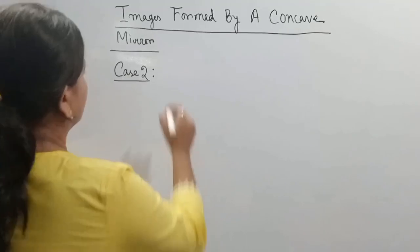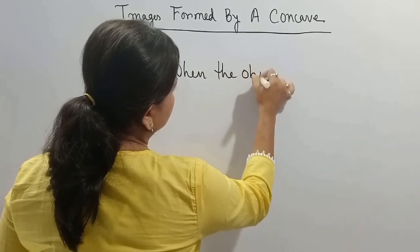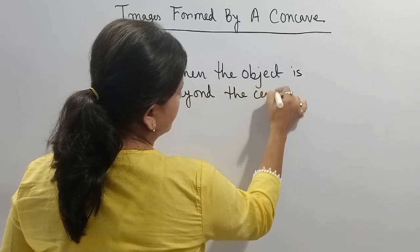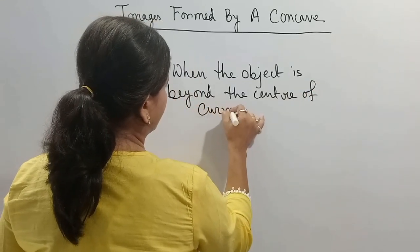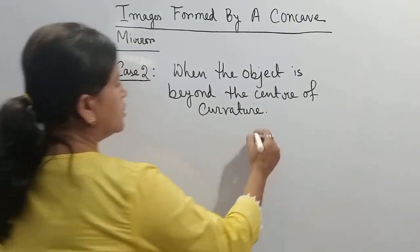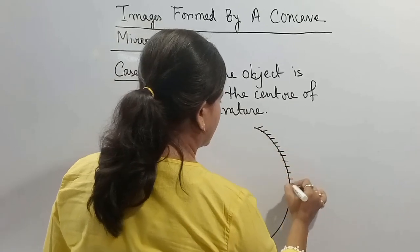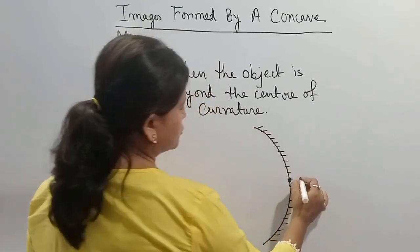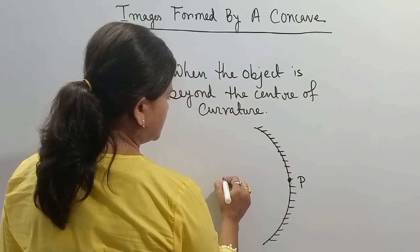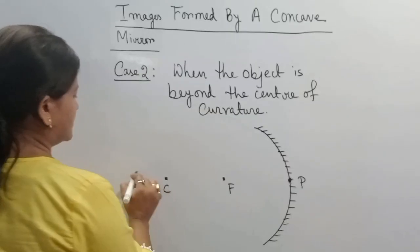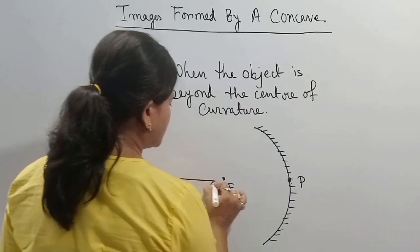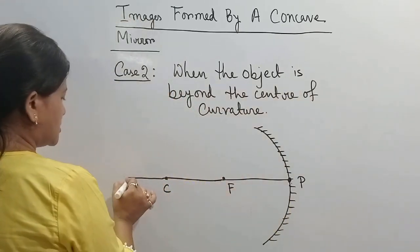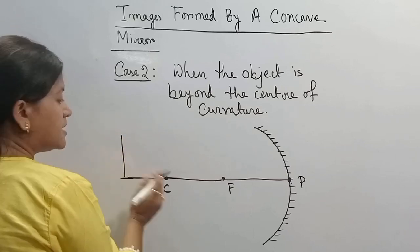The second case is when the object is beyond the center of curvature of the concave mirror. First we will draw the concave mirror — you have to draw this with the help of a compass. The center of the spherical mirror is called the pole. This is the focus and this is the center of curvature. The line which passes through the center of curvature and the pole is called the principal axis. The object is placed beyond the center of curvature.